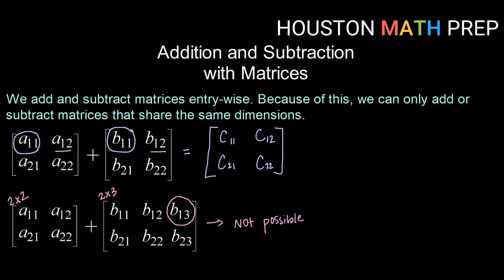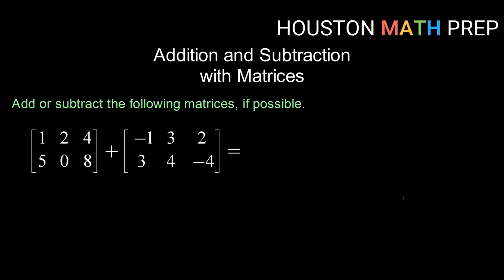So if we are adding or subtracting matrices, they have to have the same dimensions. Let's check out some examples. Here we want to add or subtract these matrices if possible. First we check: do they have identical dimensions? Our first matrix has two rows by three columns — a two by three. Our second matrix also has two rows by three columns. So we're adding a two by three with a two by three. Since our dimensions match, we can do that, and our result will also be a two by three.